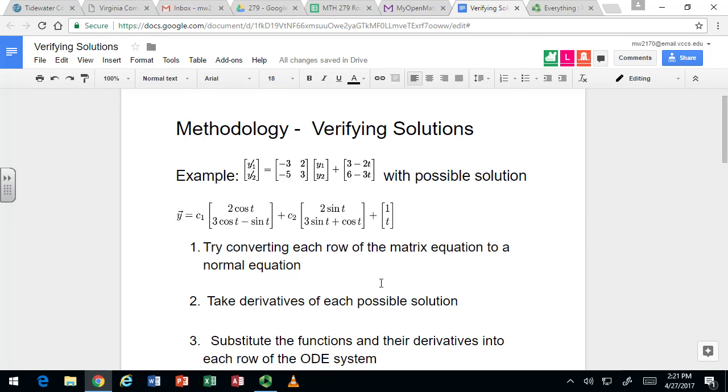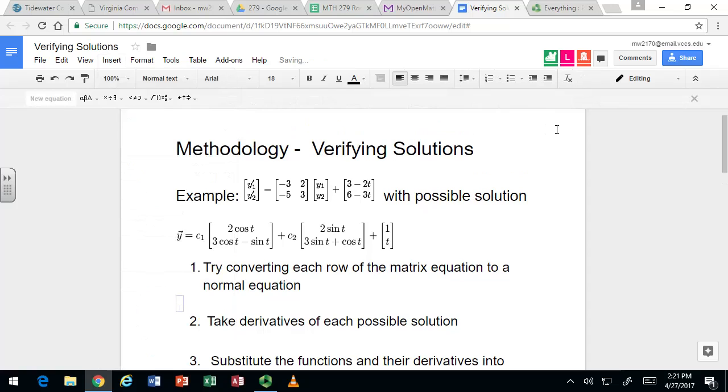So one way to check this is to go back to writing these as separate equations if you're having trouble with the matrix notation. You think of each row as its own equation, and again the vector is made up of components. Vector y is made of components y1 and y2.